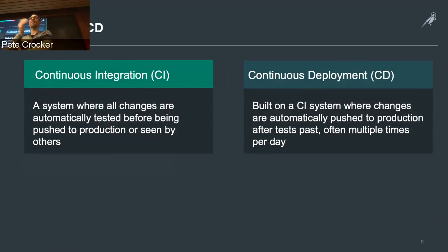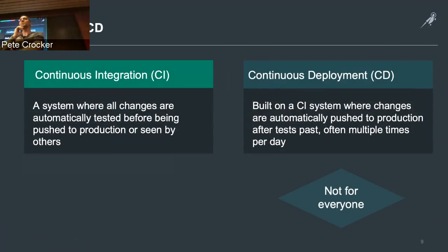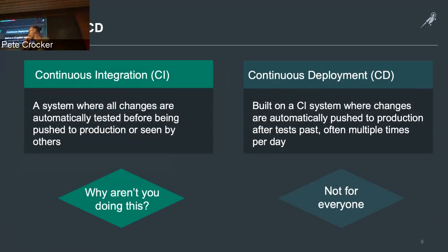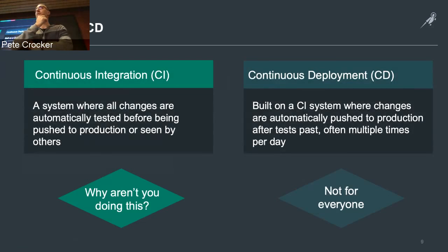Continuous deployment, on the other hand, is actually having the tools push changes straight into production. In a networking world, almost no one does this. We do have a few customers brave enough, but for the most part when you're making changes to a production environment you still want a human there during a maintenance window coordinating with applications and server teams. Continuous integration, however, you can take advantage of right now — and it can help avoid common configuration mistakes before they get pushed to production.